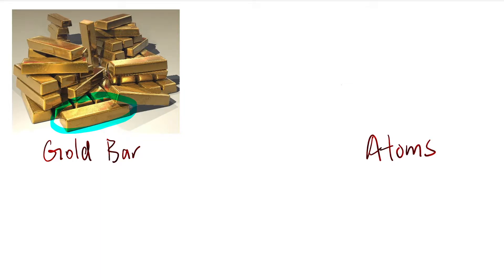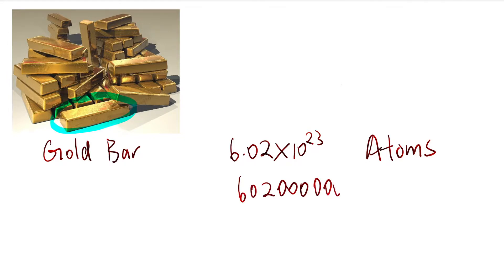So how many atoms are there in a gold bar? Let's say in one gold bar there are 6.02 times 10 to the power 23 atoms. This value is pretty large — it's like 602 followed by about 20 zeros — and it's really annoying to keep mentioning this number. That is where the mole comes into place.